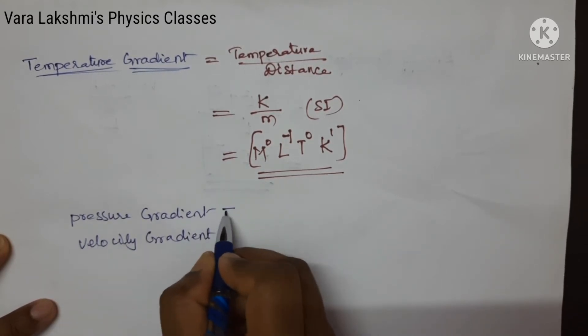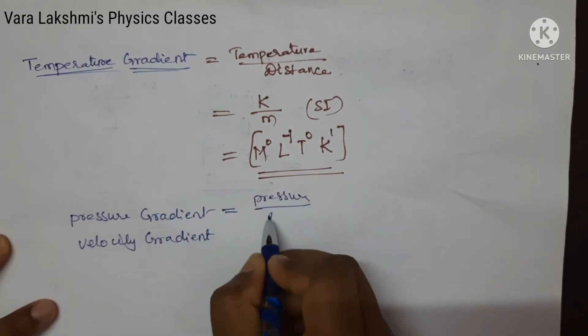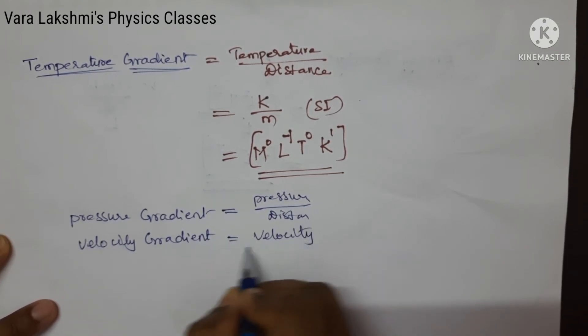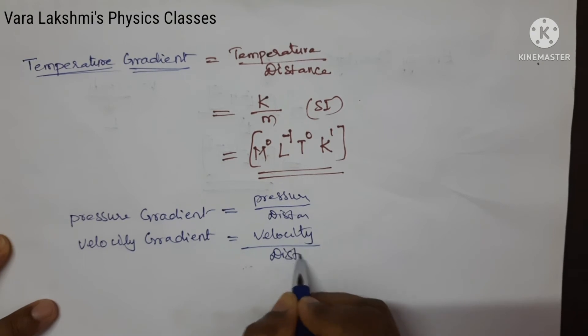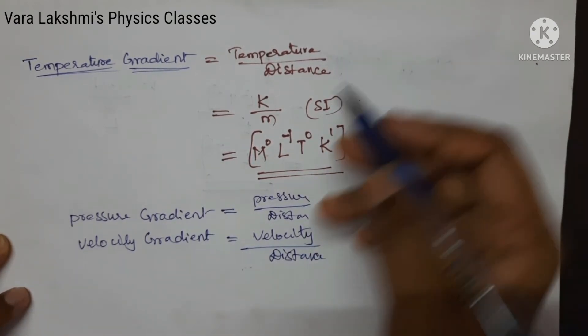See, here also the formula is pressure upon distance. And velocity is velocity upon distance. So here is also temperature upon distance.